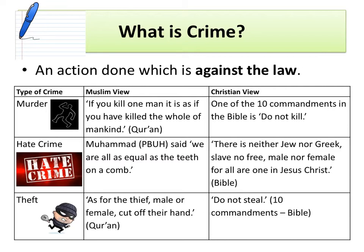The final type of crime we need to look at is theft — taking the belongings of someone else without any permission. In both Christianity and Islam we've got very specific teachings against theft. The Islamic teaching from the Quran says: as for the thief, male or female, cut off their hand. This specifies a harsh punishment, suggesting it is absolutely against God to steal. The Christian teaching is another of the Ten Commandments: do not steal — a simple statement of what God wants from you.